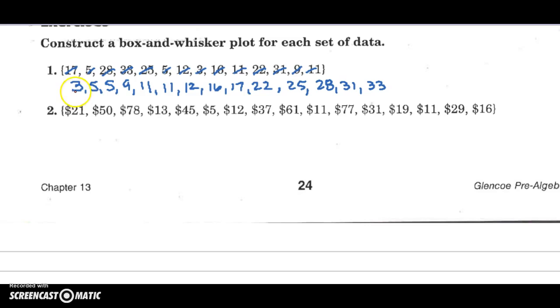So I have 14 numbers here. So halfway, the middle, is going to be seven numbers over. One, two, three, four, five, six, seven. So right here is halfway.